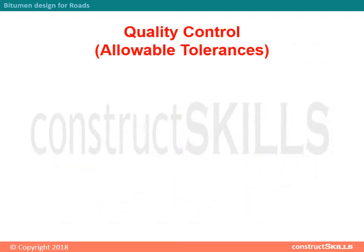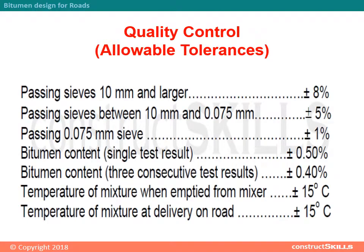Quality control and allowable tolerances: for sieve sizes 10 mm and larger, tolerance is ±8%; for sieves between 10 mm and 0.075 mm, tolerance is ±5%; for the 0.075 mm sieve, tolerance is ±1%. For bitumen content, a single test result tolerance is ±0.50%, and three consecutive test results tolerance is ±0.40%. Temperature of mixture from the mixer and at delivery on road both have a tolerance of ±15°C.